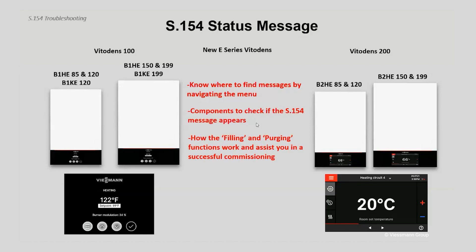These filling and purging functions would be part of either option you choose — that's part of the whole commissioning process. I want to explain how those two functions actually work when you're performing them and why they will help you be successful, so that you come out of commissioning and the boiler isn't in the S154 mode — it's going to be firing and operating as you expect. We'll roll through scenarios where you might see the S154.